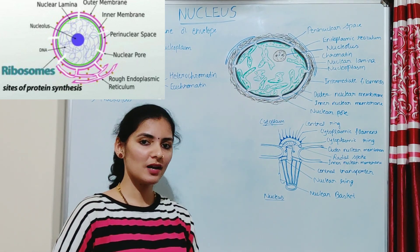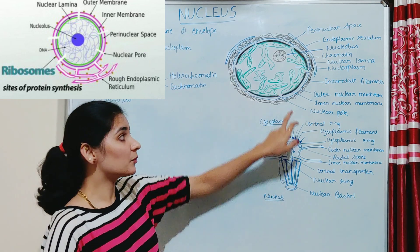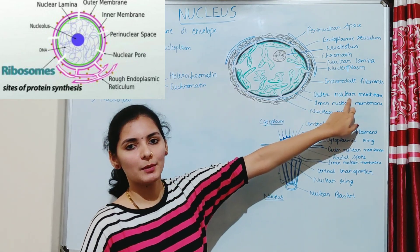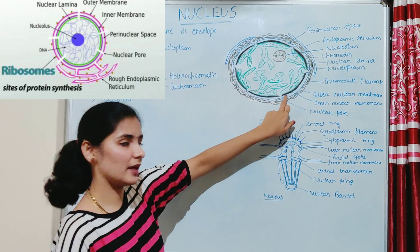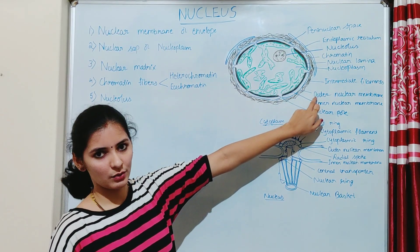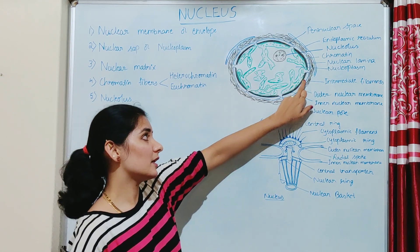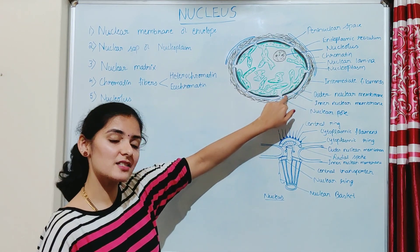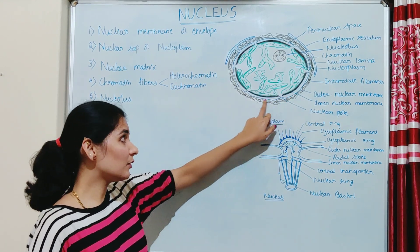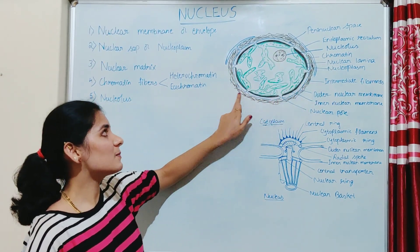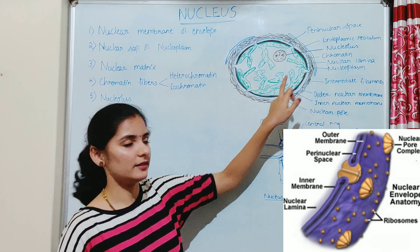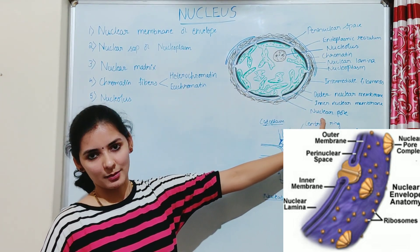The ribosomes on the outer nuclear membrane function in protein synthesis. The protein synthesized enters the perinuclear space — the fluid-filled space between the inner and outer nuclear membrane — which consists mainly of lipid droplets and protein. Apart from that, the nuclear envelope is porous in nature, consisting of many pores known as nuclear pores.